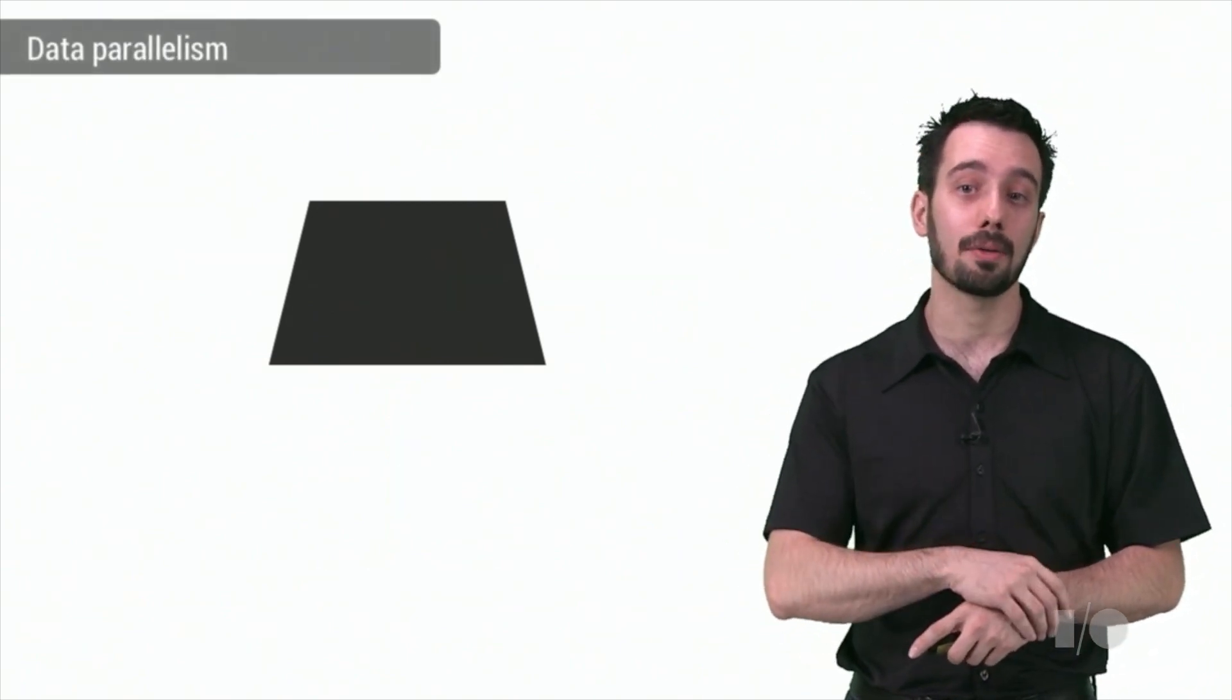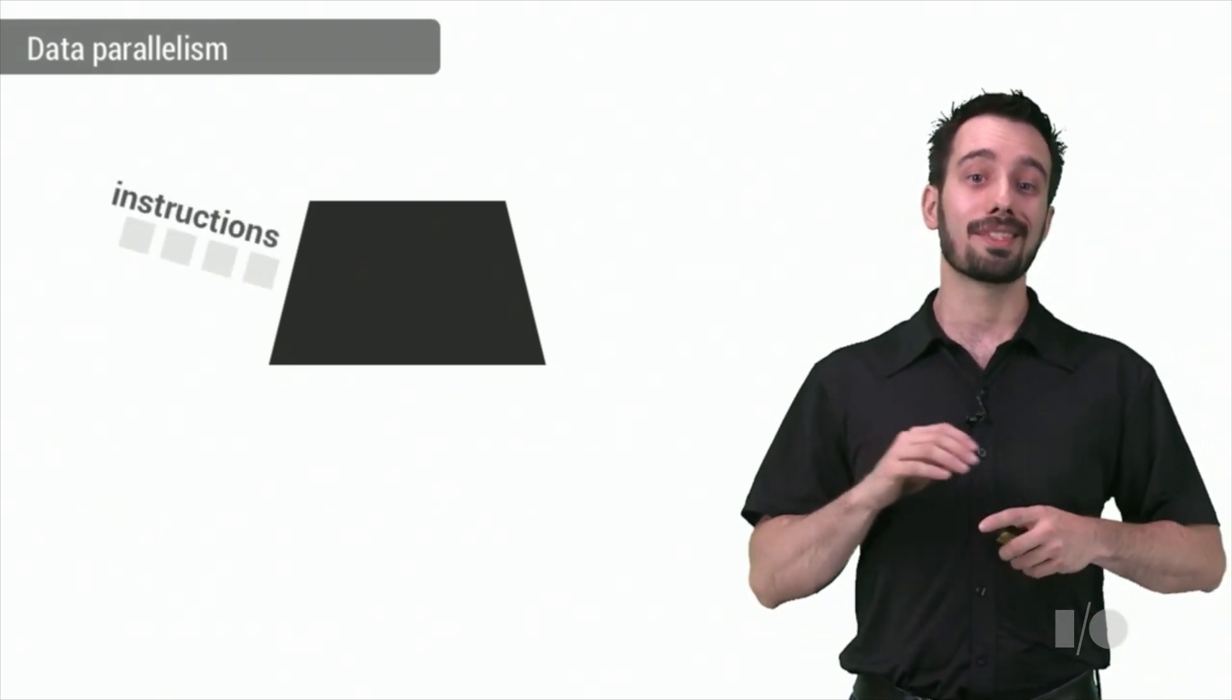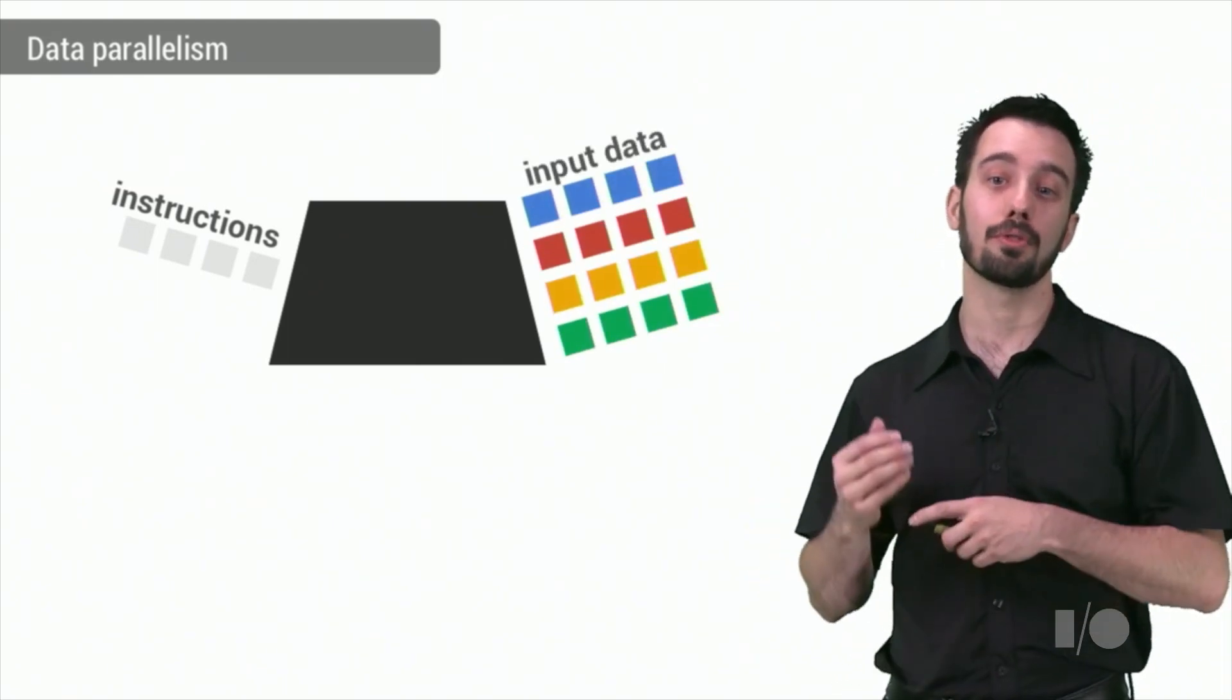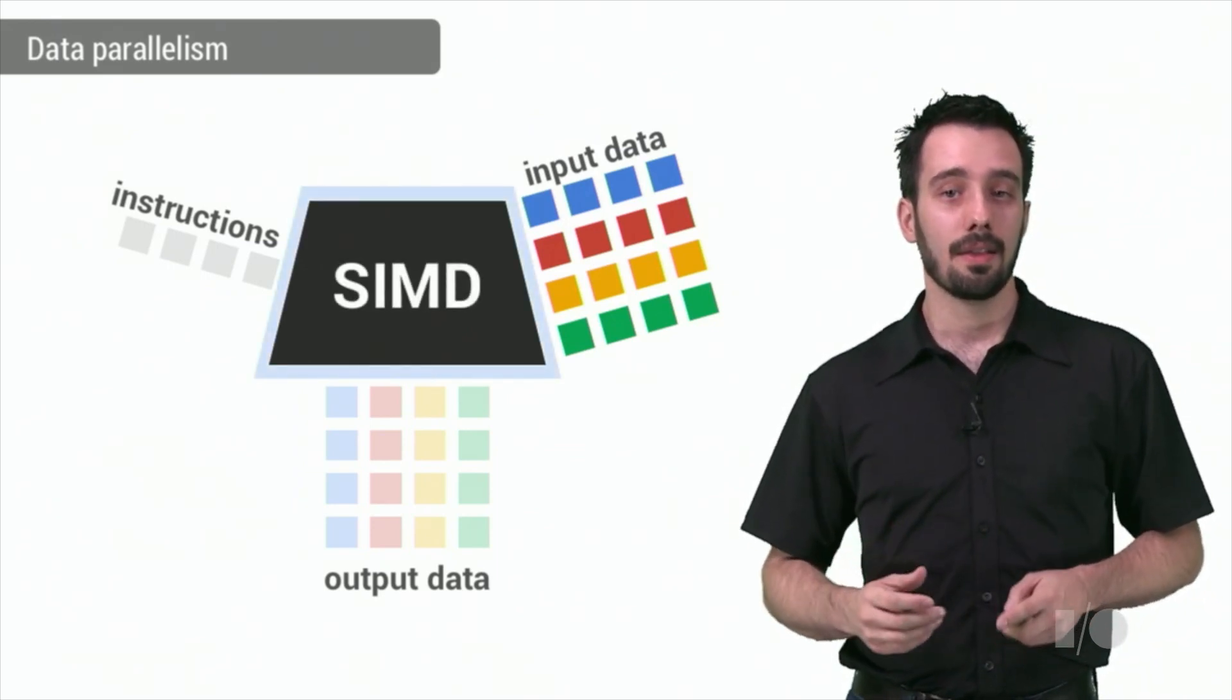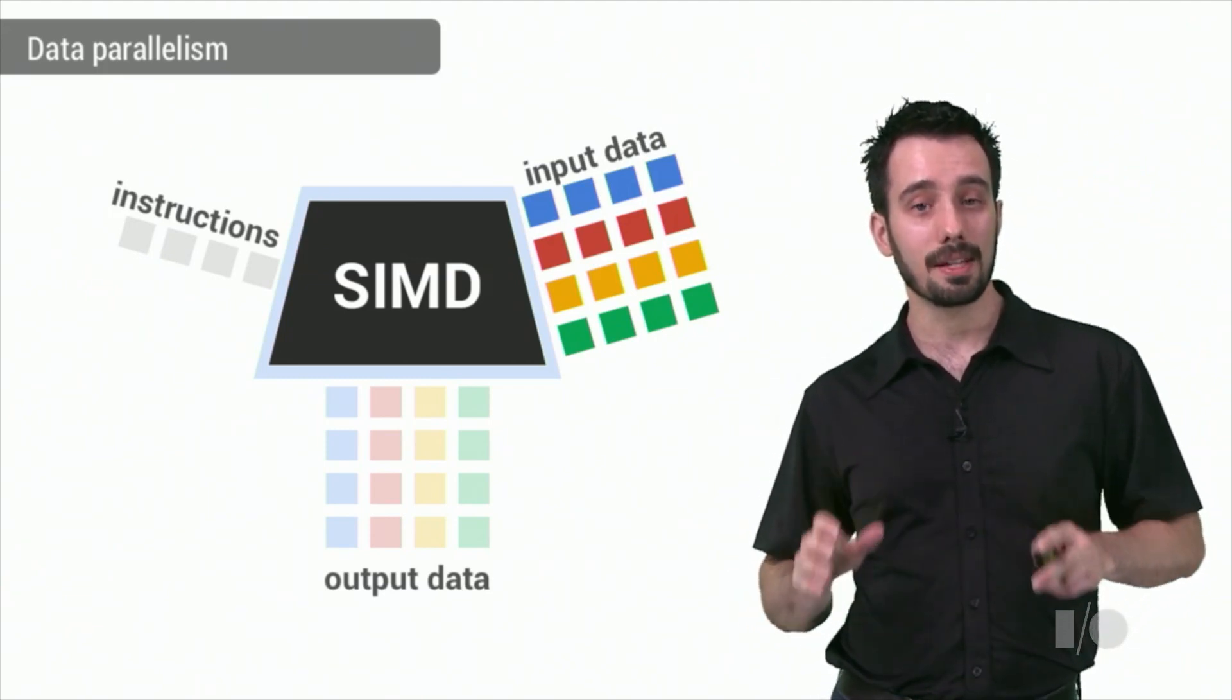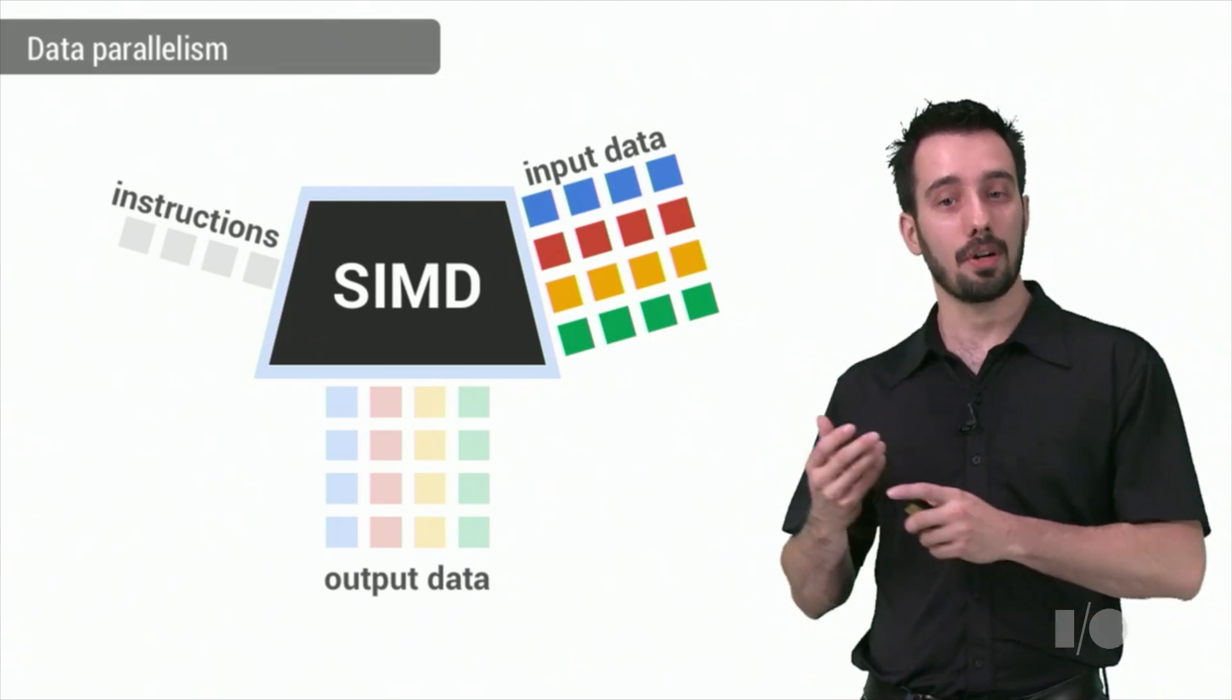And that's where data parallelism comes in, where the functional unit takes instructions and performs the same work on multiple sources of data per instruction, generating multiple output data per instruction. This single instruction multiple data model is called SIMD. There's still a single instruction stream, but multiple pieces of data are fetched at the same time, operated on, and multiple corresponding outputs are created.